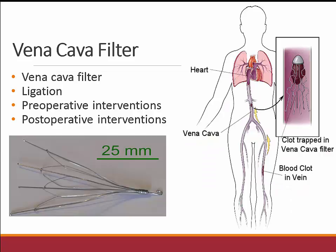The vena cava filter is insertion of an intra-caval filter that partially occludes the inferior vena cava and traps emboli to prevent pulmonary emboli. Ligation is suturing or placing clips on the inferior vena cava to prevent pulmonary emboli. Preoperative interventions include instructing the patient to contact their caregiver if they have fever, chills, cough, feel weak or achy, their skin is itchy, swollen, or has a rash, they feel faint, the bandage becomes soaked with blood, or the incision is swollen, red, or has pus.